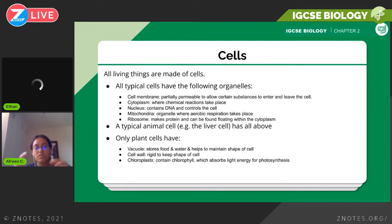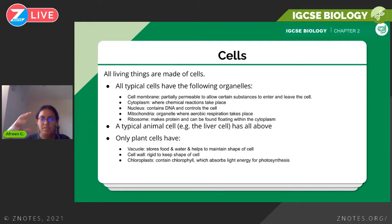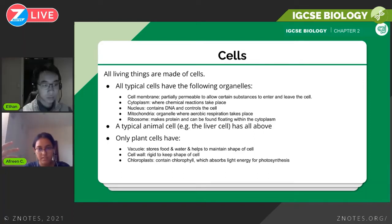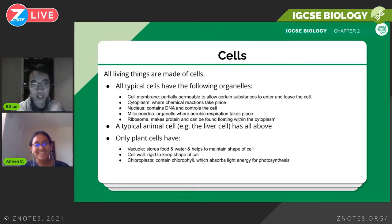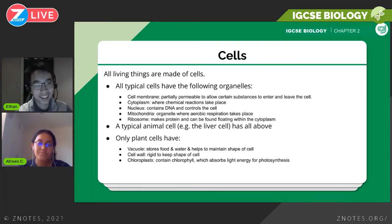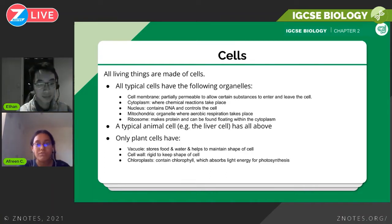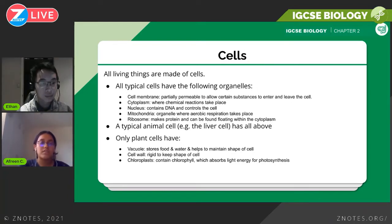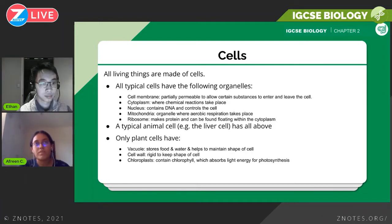Cell walls provide additional external support and keep the cell rigid, helping to maintain its shape as well. Then there's chloroplast — chloroplast contains a green pigment called chlorophyll, which absorbs light energy to be used in photosynthesis. This light energy is converted to chemical energy and used in photosynthesis. You'll look at that process in more detail in the next few chapters.